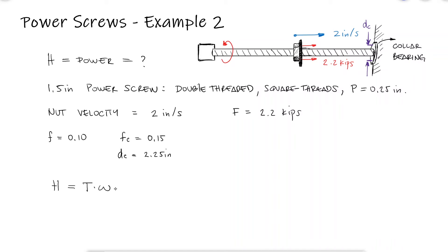If the nut's linear velocity is 2 inches per second, it means that the threads on the screw are also moving at 2 inches per second. If the lead is defined as the distance the nut would advance for one full rotation of the screw, then the velocity divided by that distance, L, would give us the number of revolutions per second.